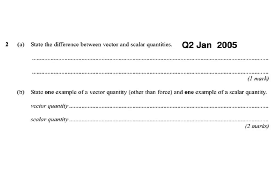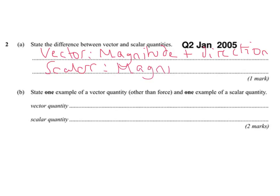So first question, easy definition style of question, the difference between vector and scalar quantities. So this is just a case of remembering that vectors have magnitude and direction, scalars just have magnitude. So there's no indication of direction with a scalar type thing. So that's nice and simple to start with.